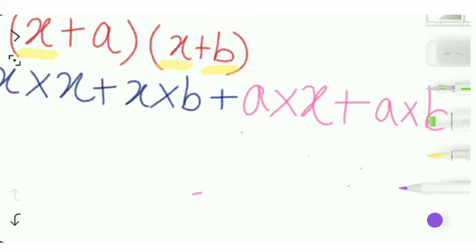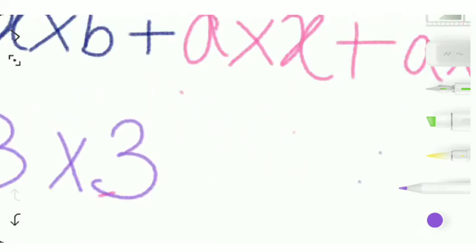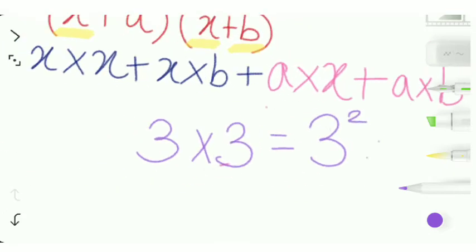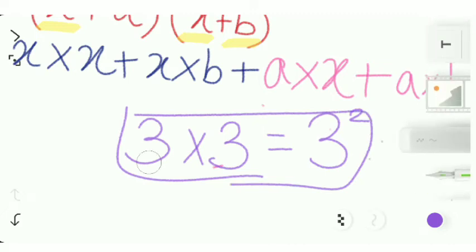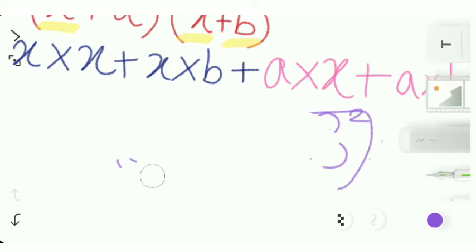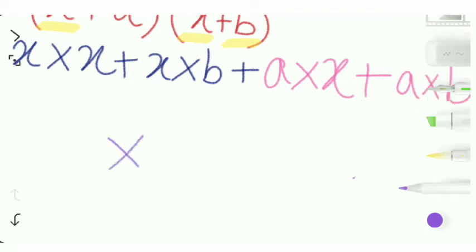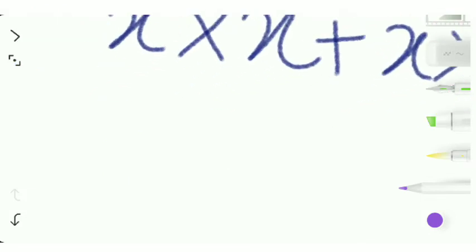So any number, we can take that as 3 multiplied by itself, will be the square of the number. So 3 multiplied by 3 equals 3 squared. And if we say x multiplied by x, it will be x squared. We'll just write x squared now.